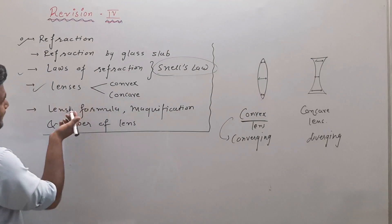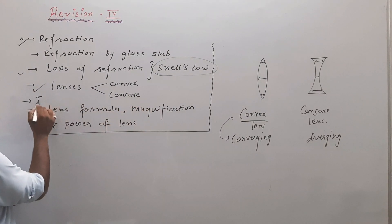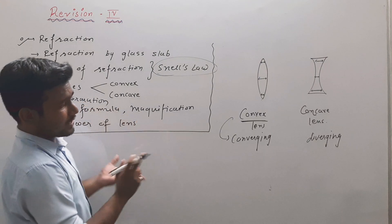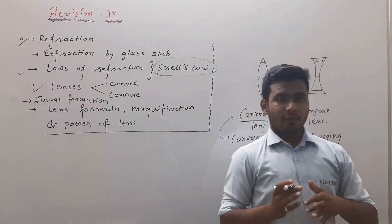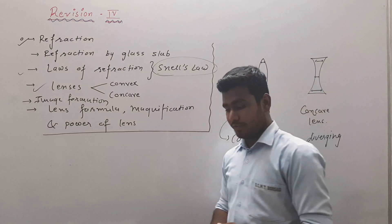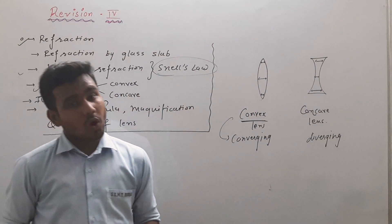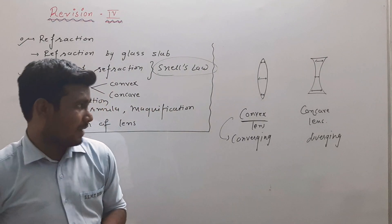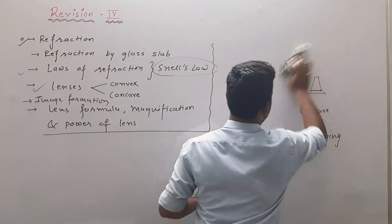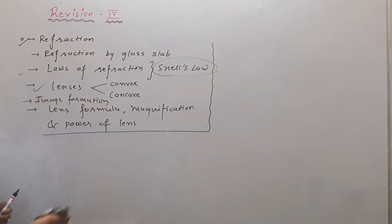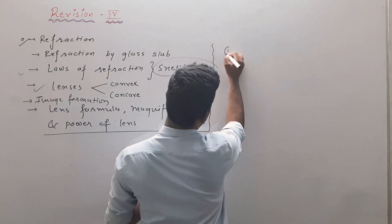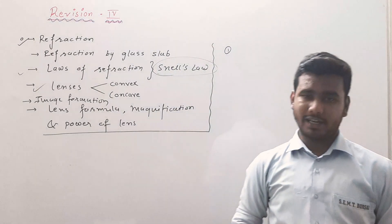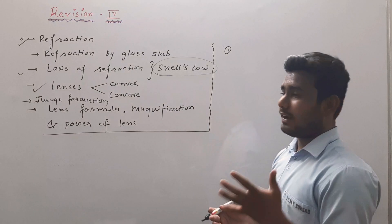We also need to understand image formation by lens. As with mirrors, we have four fundamental ray diagrams; here too we have different fundamental ray diagrams, and according to them we form different types of images. I am taking only the example of a convex lens. You can go through all the videos to learn image formation for both concave and convex lenses.